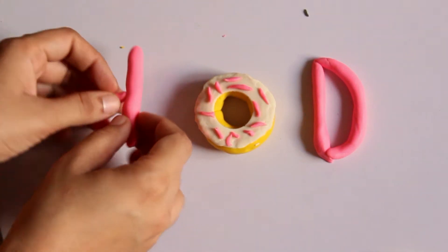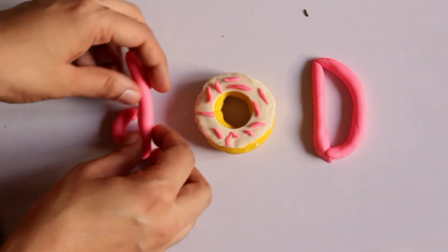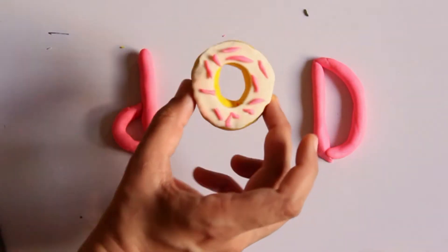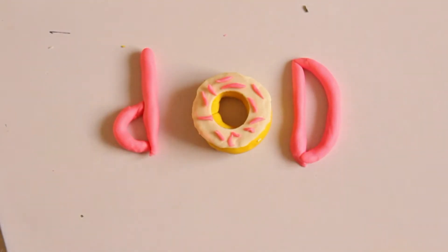D is for doughnut. Let's make a doughnut! For making a doughnut, you need any three colors of your favorite Play-Doh.